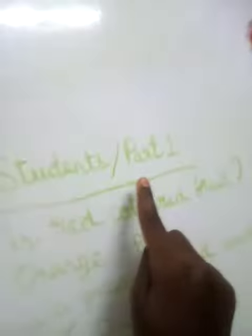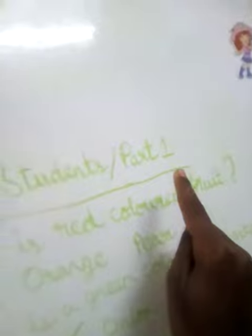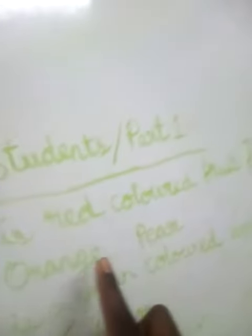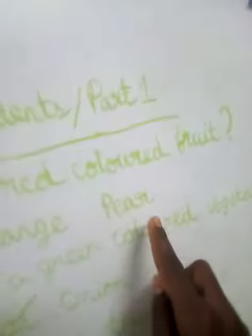Part 1. Which of these is a red colored fruit? Apple, banana, orange, or pear? Apple is the correct answer.